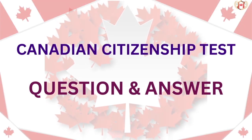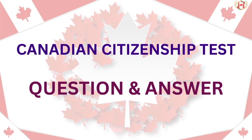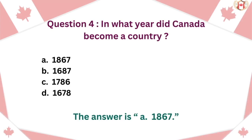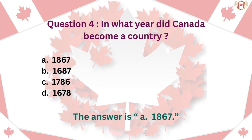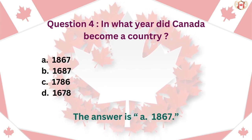Canadian Citizenship Test Question and Answer. Question 4: In what year did Canada become a country? A. 1867, B. 1687, C. 1786, D. 1678. The answer is A. 1867.